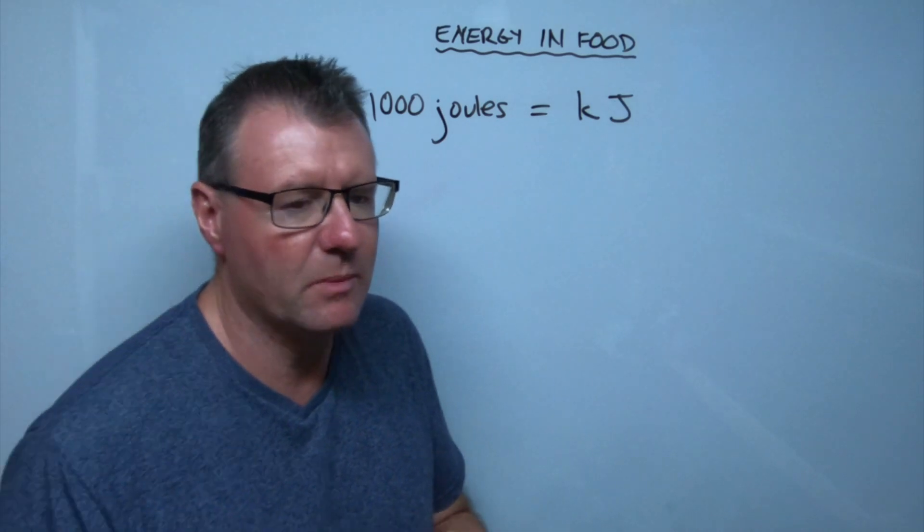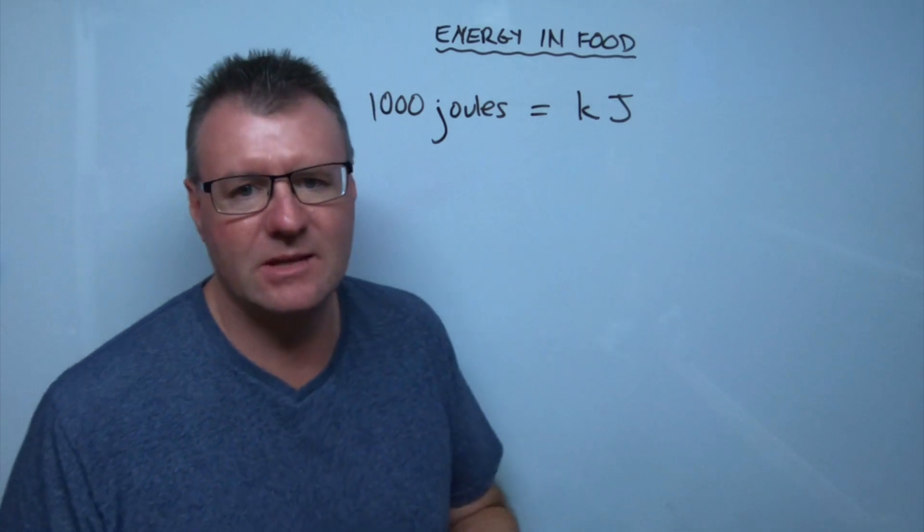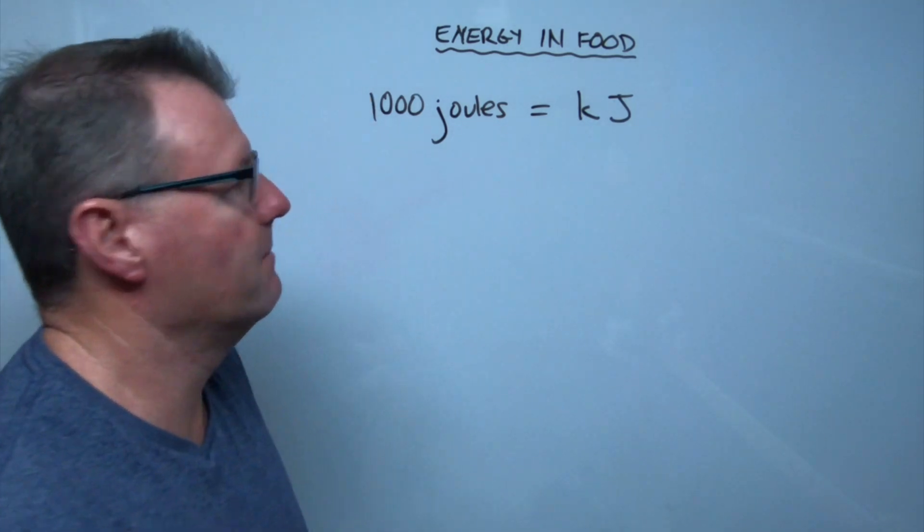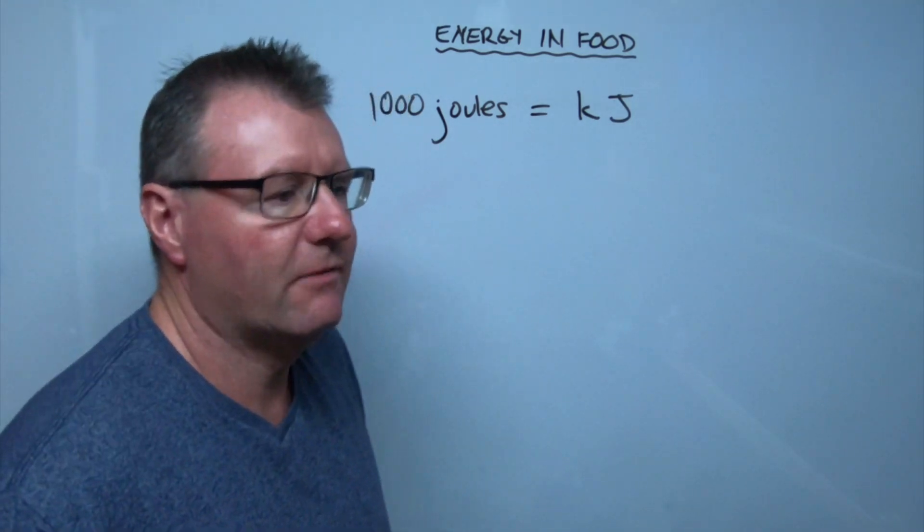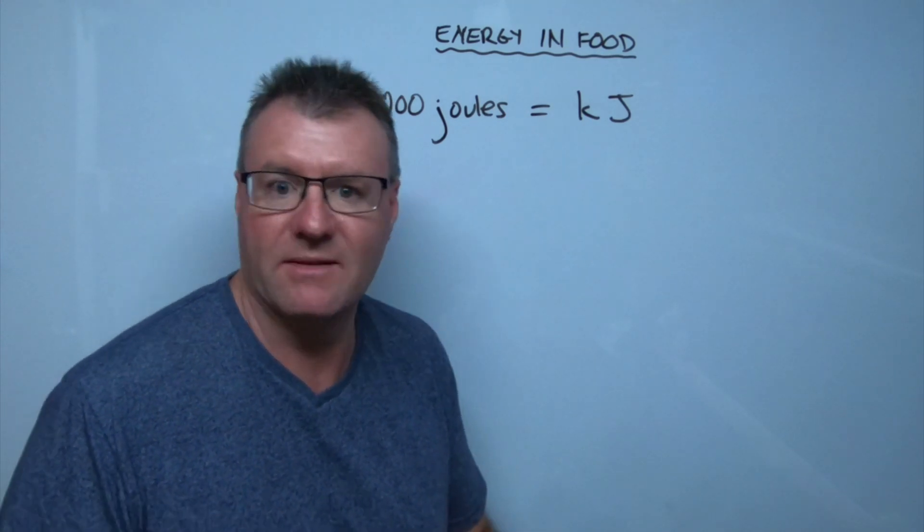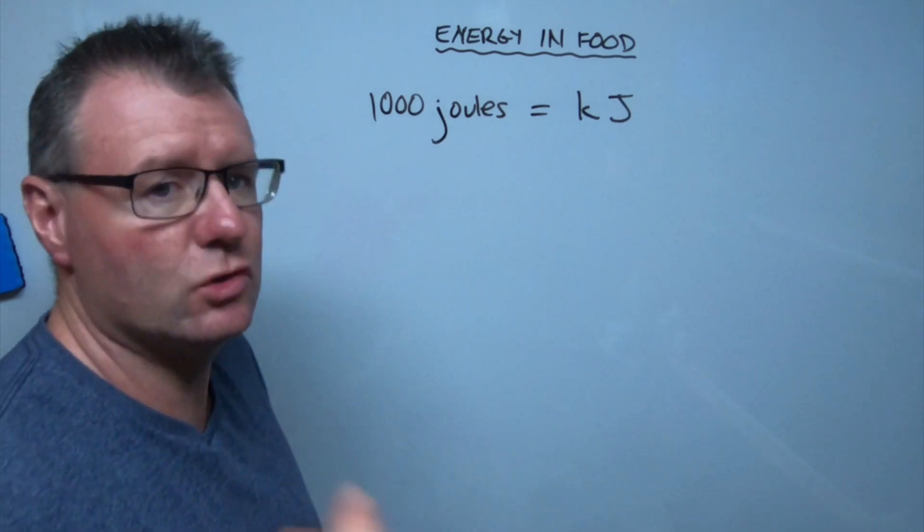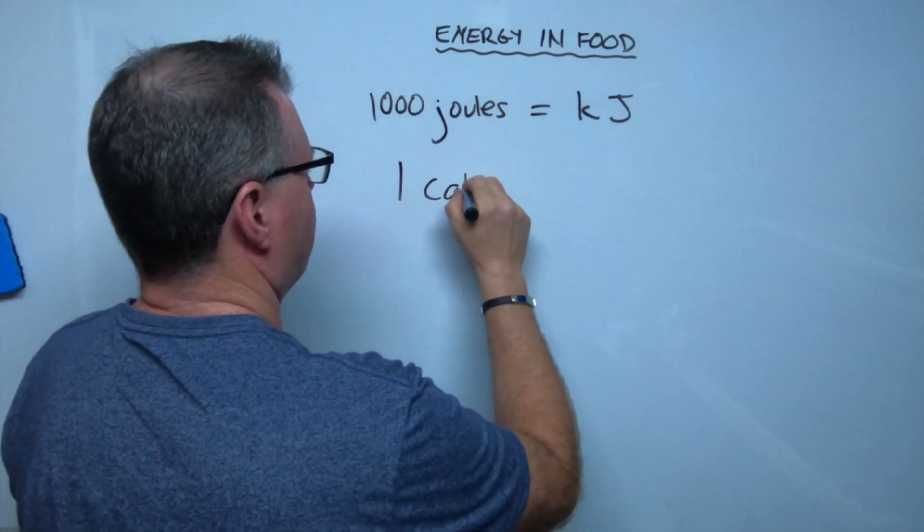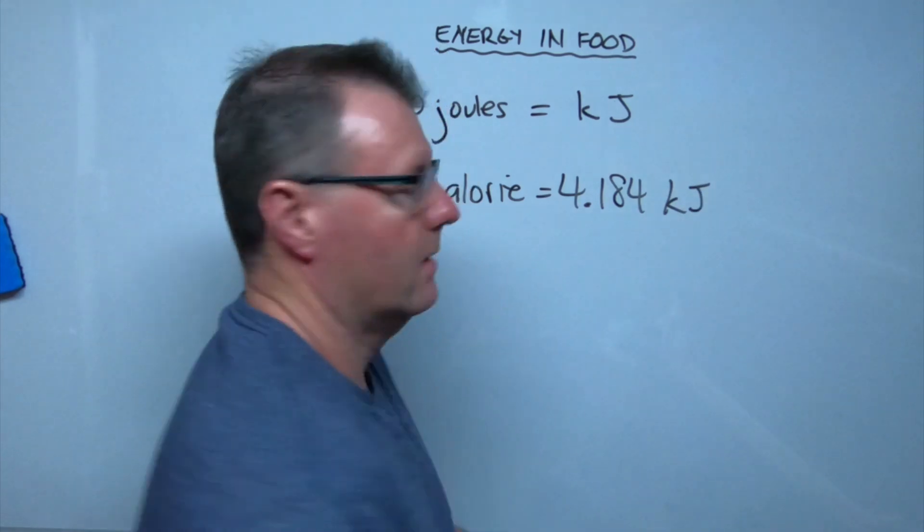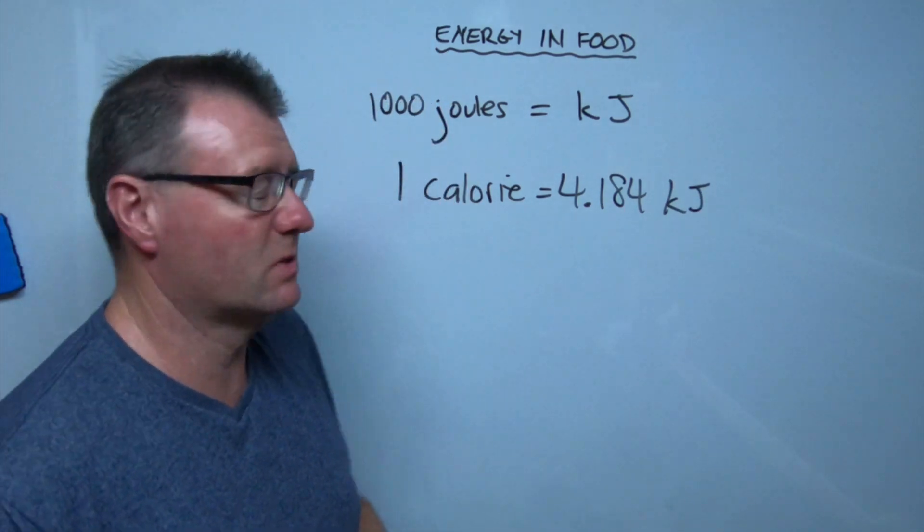Now it used to be, you've probably heard us talk about calories when we talk about food, but kilojoules is the more modern SI measurement that we use. And if you look at food labels, often you'll see a bit of both, but usually it's kilojoules and they might have a calorie conversion. So what's the relationship between calories and kilojoules? Well, one calorie equals 4.184 kilojoules. That's the conversion between the two.